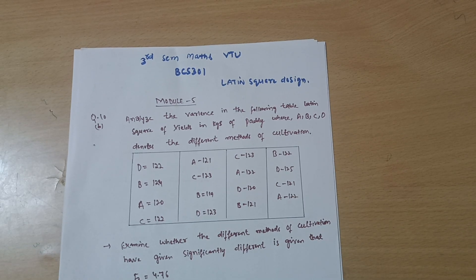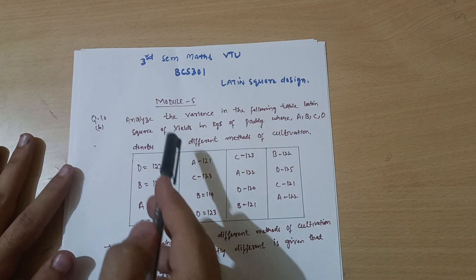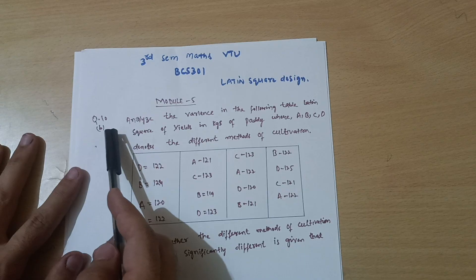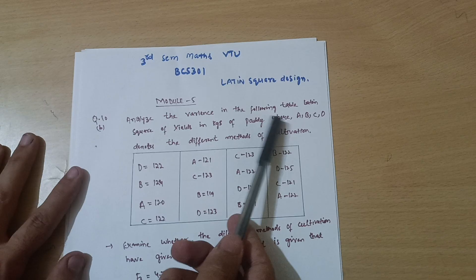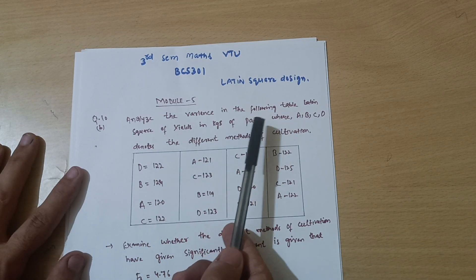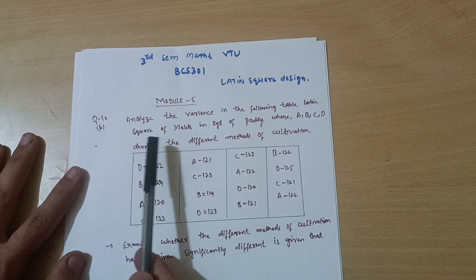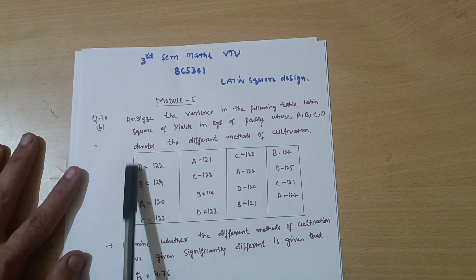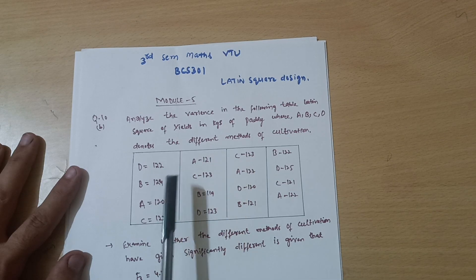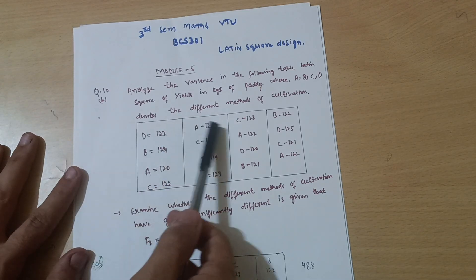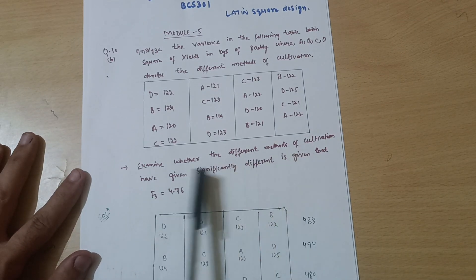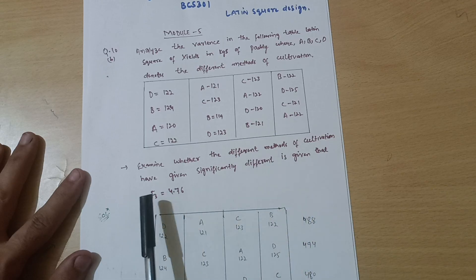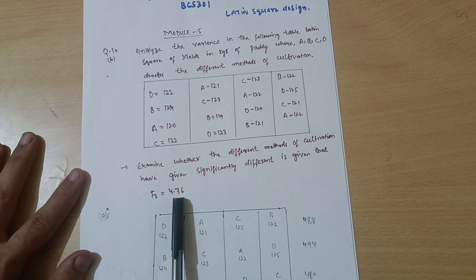Hello everyone and welcome back, dear friends. Hope you are all doing well and your preparation is going well. In this video I will discuss the last question of the model paper - the Latin Square Design. We need to analyze the variance in the following table: Latin Square of yields in kg of paddy, where A, B, C, D denote the different methods of cultivation. Examine whether the different methods of cultivation have given significantly different results, given that F3 is equal to 4.76.